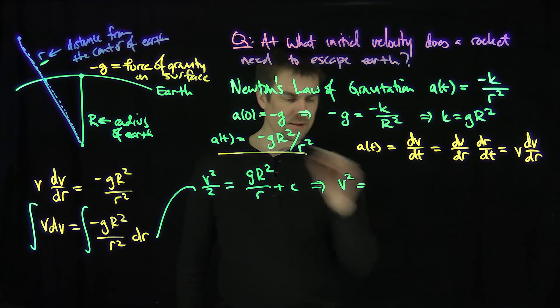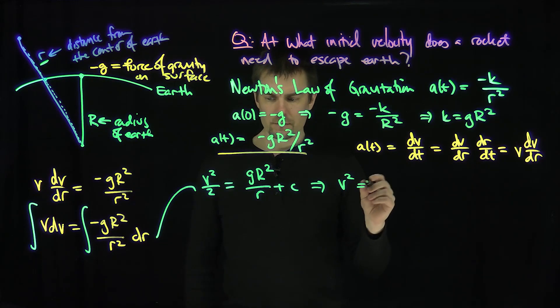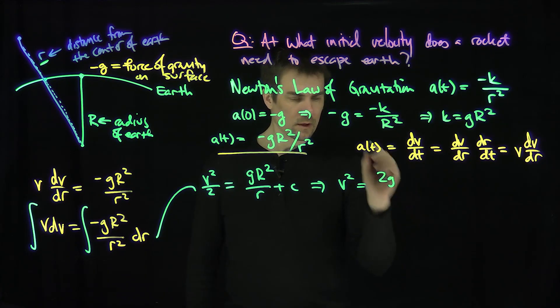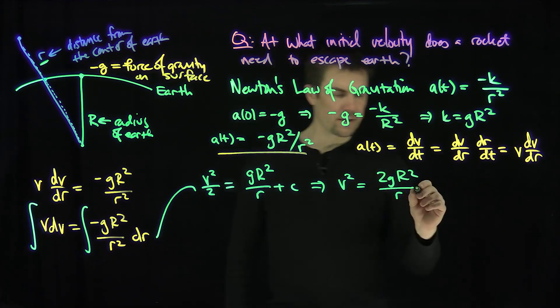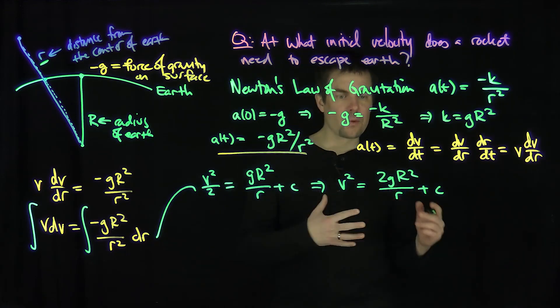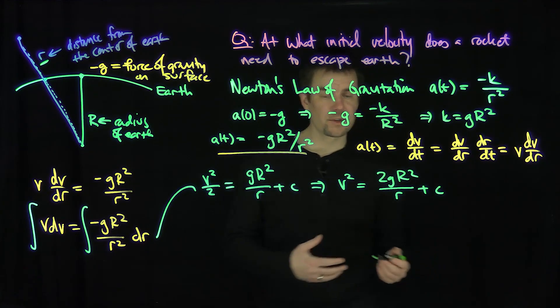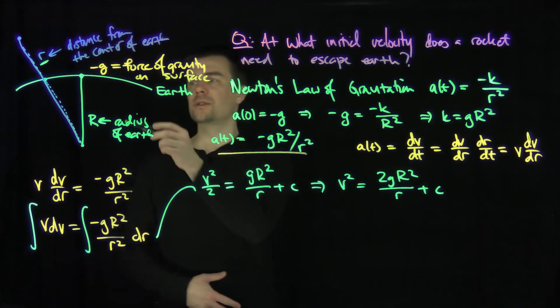So multiply by 2, and our conclusion is that v squared equals 2gR squared over r plus a constant c. Now, when we plug in time equals 0, I know that my velocity is v0, the initial velocity, and I know that little r equals R capital.